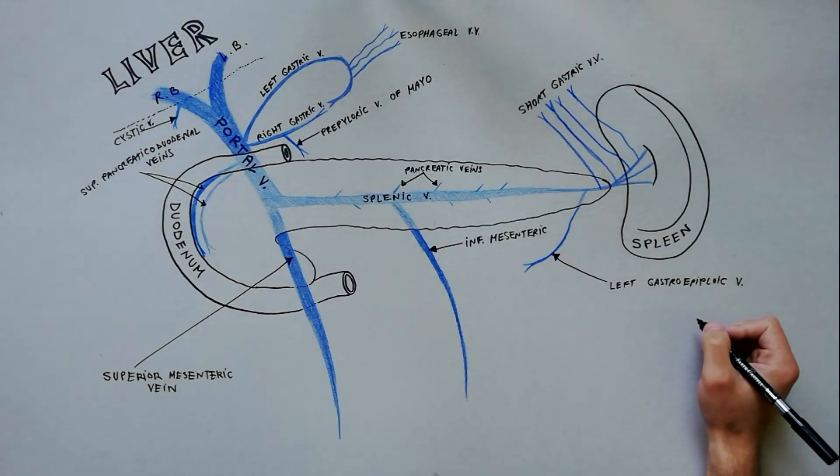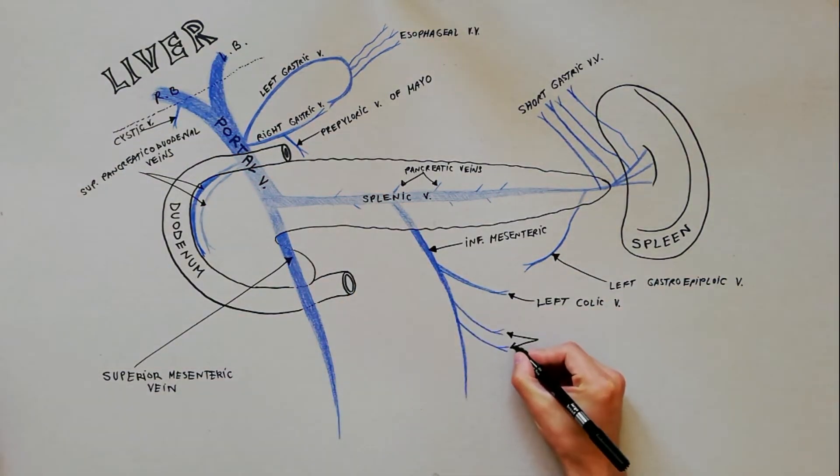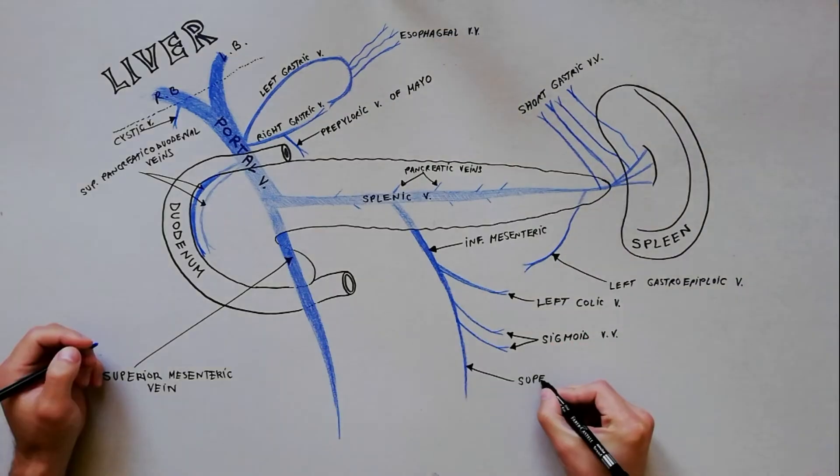Tributaries of the inferior mesenteric vein are the left colic vein, few sigmoid veins, and the superior rectal veins.